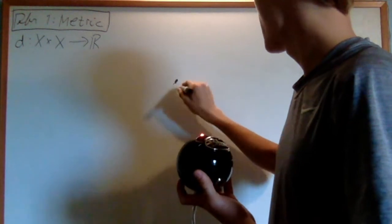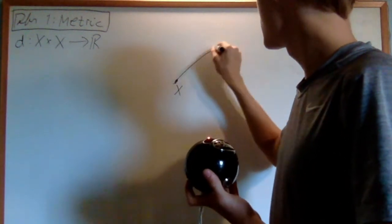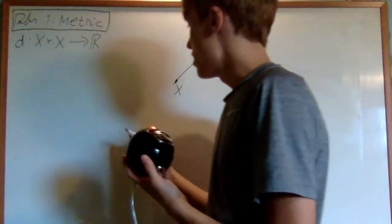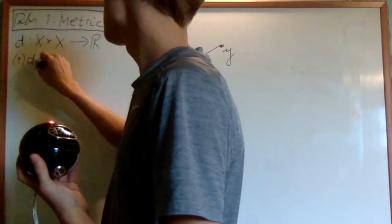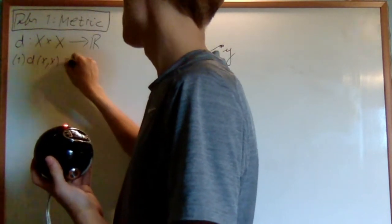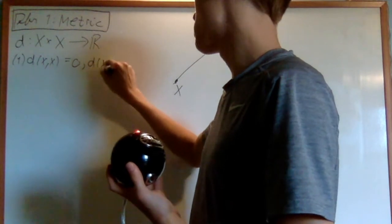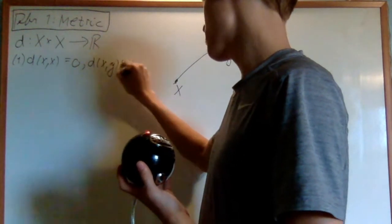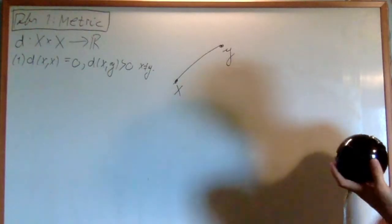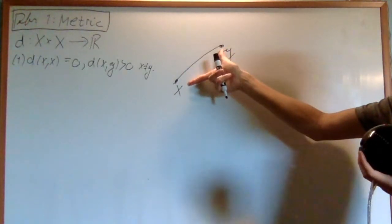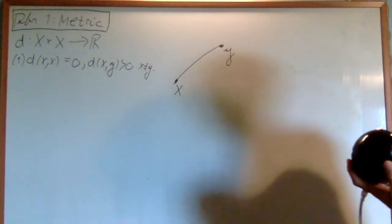The first property is going to be that the distance between x and x is zero, and that the distance between x and y is bigger than zero for x not equal to y. So for two distinct points, this distance is positive. And if it's between x and x, then it's just zero.